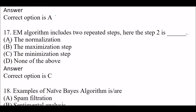Next question: The EM algorithm includes two repeated steps. Here step two is — Option A: The normalization, Option B: The maximization step, Option C: The minimization step, Option D: None of the above. Right answer is Option C — the minimization step. This is the second step of the EM algorithm.